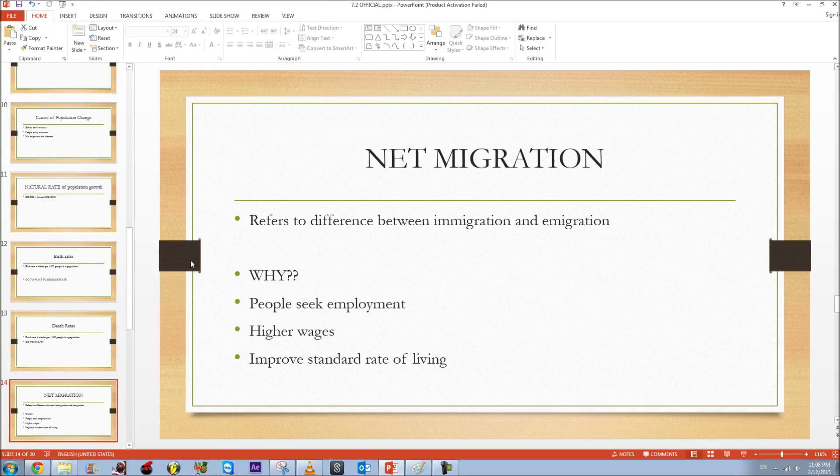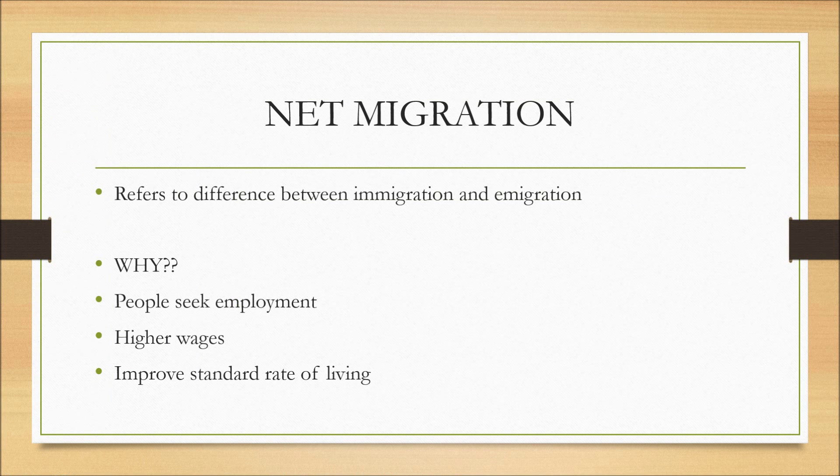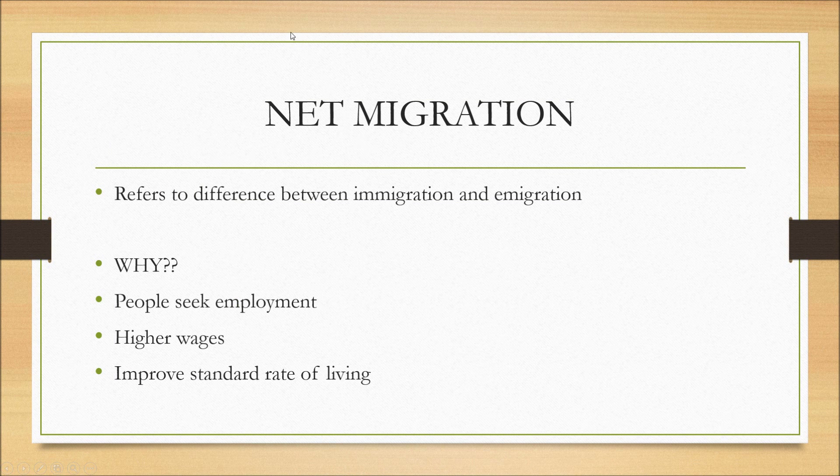Which brings us to the third concept of causes of population change which is net migration. And this basically refers to the difference between immigration and emigration. Immigration is people coming into a country and emigration is people going out into a country. And why people do this or why does it happen? So people seek employment or they have a better working position in the new country. They might think they have higher wages and improved standard rate of living.